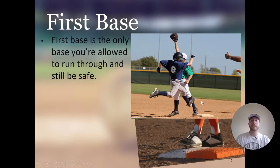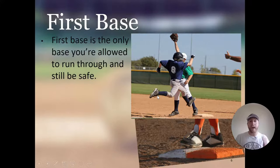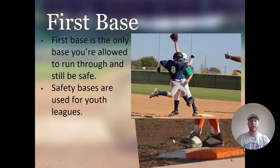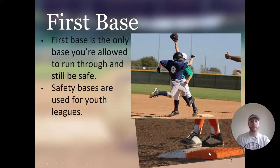First base is the only base you're allowed to run through and still be safe. After you hit the ball, you can run as fast as you can, hit the bag, and still run past it — if you beat the throw, you are safe. Safety bases are used in youth leagues: if you see an orange base next to first base, that's a safety base. It allows the defense to use the white bag to catch the ball while the runner steps on the orange safety base, preventing collisions.